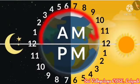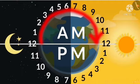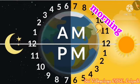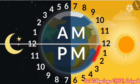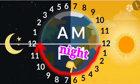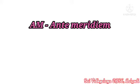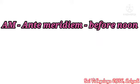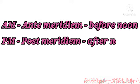The first part goes from 12 midnight to 12 noon, and this is AM — it is morning. From 12 noon to 12 midnight, this is PM — it is night. AM means ante meridiem, meaning before noon. PM means post meridiem, meaning after noon.